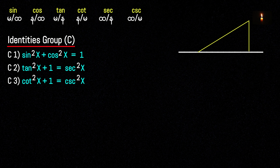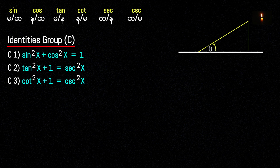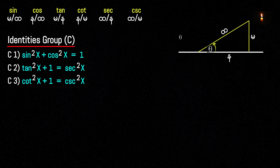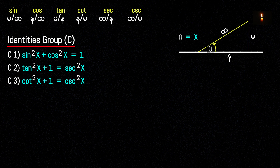This one — dividing through by cos squared x.